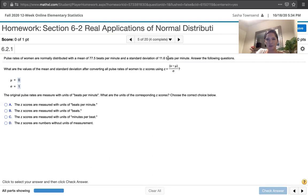If you look at this quotient over here, x is measured in beats per minute and the mean is measured in beats per minute. So you're subtracting beats per minute from beats per minute and you're getting a number of beats per minute.